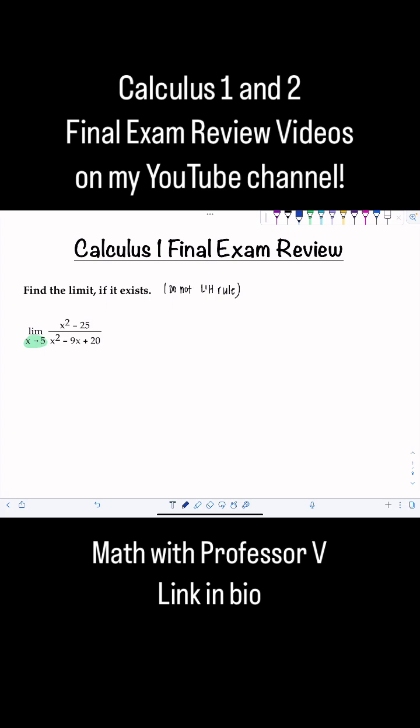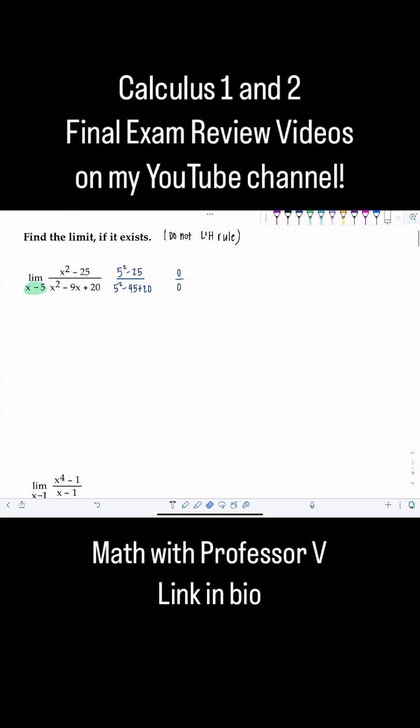So let's see: 5² - 25 over 5² - 45 + 20. Yeah, I'm gonna get a 0 over 0, which we know is an indeterminate form, but we can't use L'Hôpital's rule. So what else can we try?